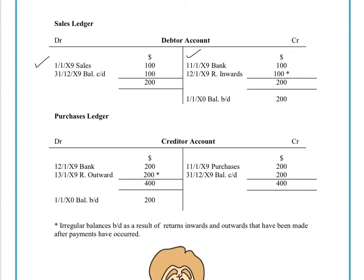Now of course that account should be dead. But let's assume that he's been rather hasty — he's paid us before he's checked that the goods are actually what he ordered, or before he's checked that the goods actually work. He's later found out that he wants to return the goods inwards to us as a business. The returns inwards is going to go out of our debtor account into our returns inwards T account. So you're left with this irregular balance carried down and brought down — a balance brought down of 100. And that's why in a control account sometimes you get a balance brought down on the credit side.